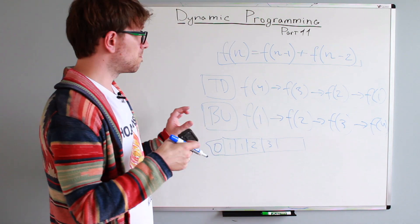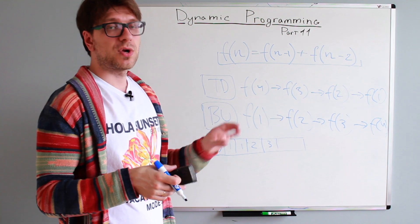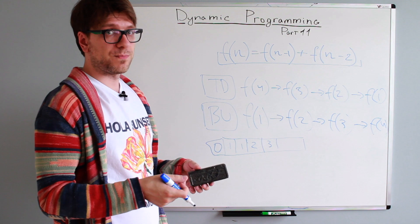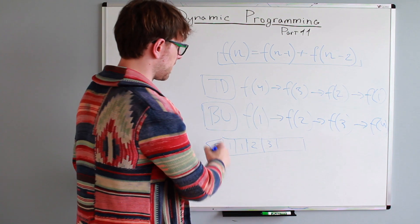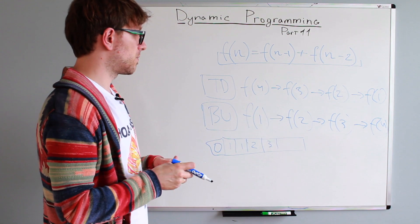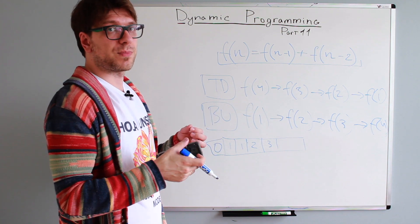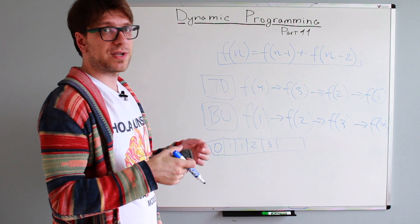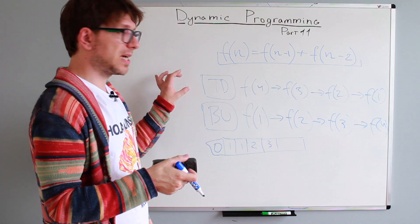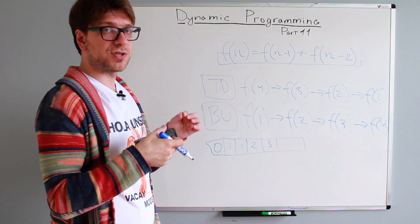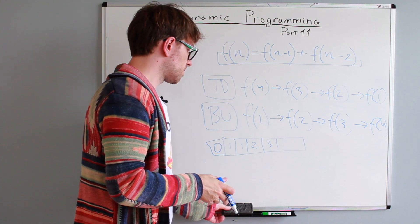The major difference is that when we use the bottom-up approach, we always use iteration — it's always about iterating over the array. This means there is no way we will ever get a stack overflow. With top-down dynamic programming, if the recursion tree is too deep, it's possible to get a stack overflow error.